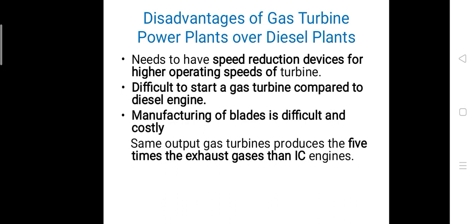Difficult to start a gas turbine compared to a diesel engine. Manufacturing of blades is difficult and costly. For the same output, a gas turbine produces 5 times the exhaust gases compared to IC engines. This is because the gas turbine engine is an air breathing engine with a stoichiometric air-fuel ratio of 100 to 1, whereas the IC engine ratio is 14.5 to 1. That is why gas turbines produce approximately 5 times the exhaust gas of IC engines.